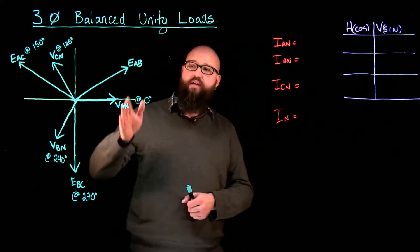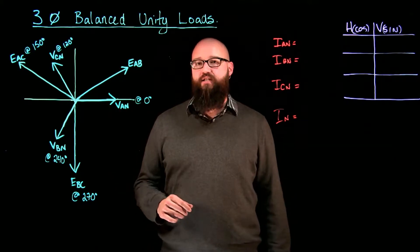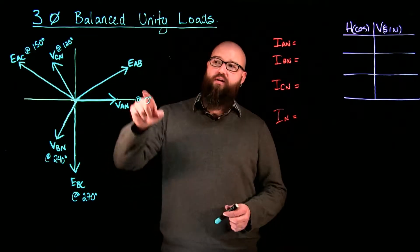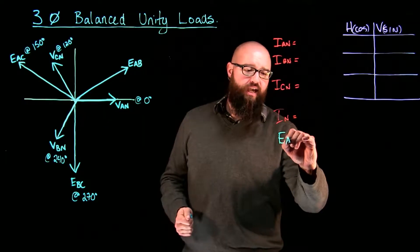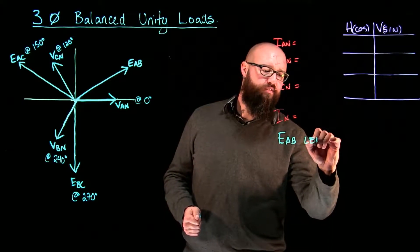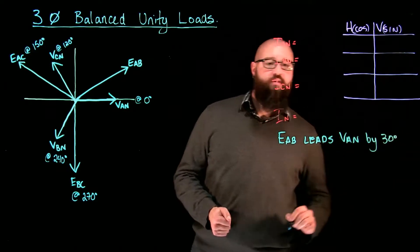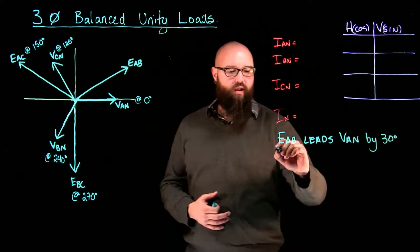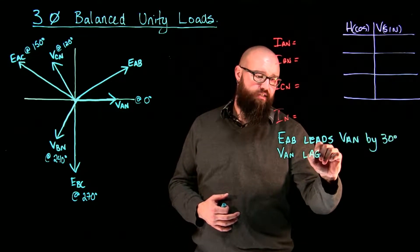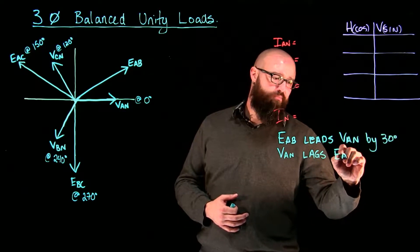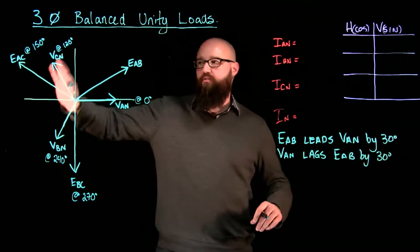I've gone ahead and plotted our phase voltage and our line voltage, and if we take a look at V A to N as our reference, we can see clearly right here, if I look at E A to B, which is our line voltage A to B, I can say E A to B leads V A to N by 30 degrees. I can flip it and say the opposite as well — V A to N lags E A to B by 30 degrees also.